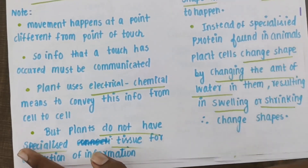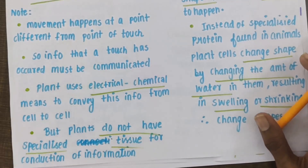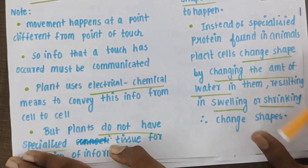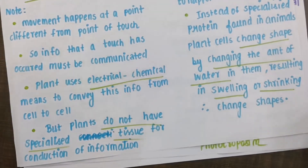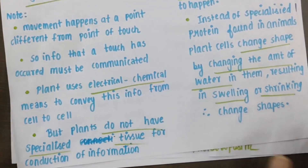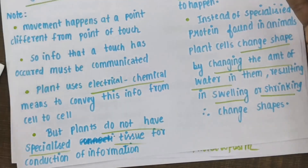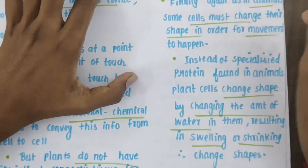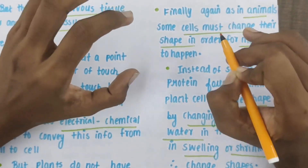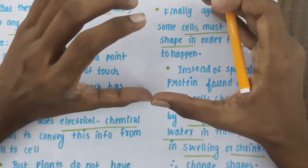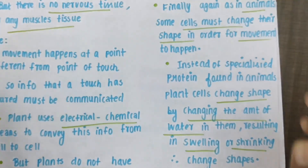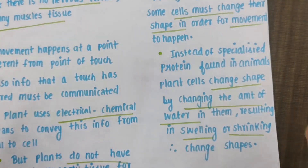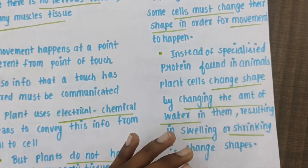The information will be transmitted from the point of touch to the other point where movement is going to take place. In animals there are specialised structures such as nervous tissue and muscles. But in plants, instead of specialised proteins as in animals — where the protein changes the shape of the cell — the plant will change the amount of water in its cells.